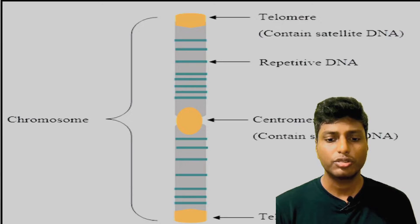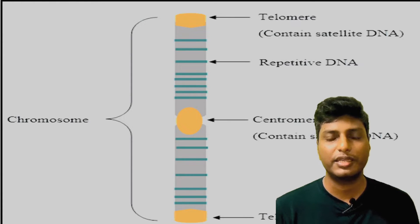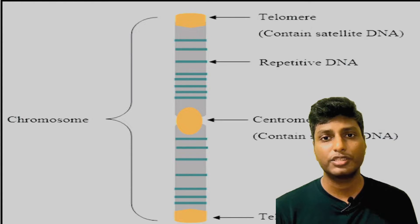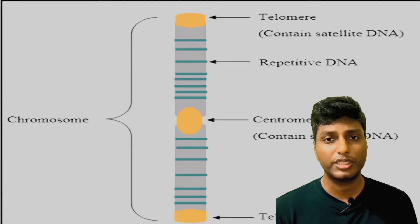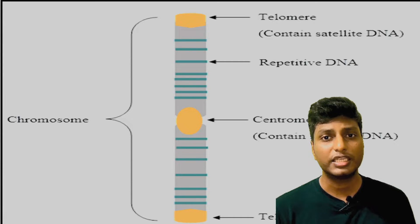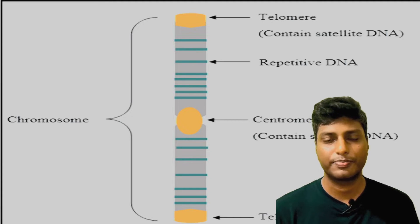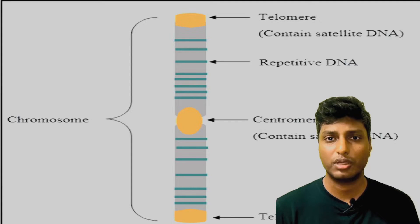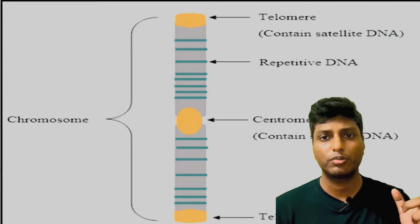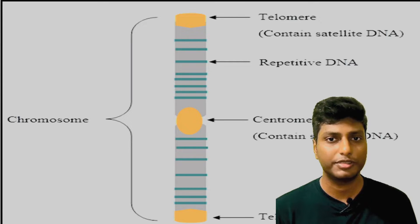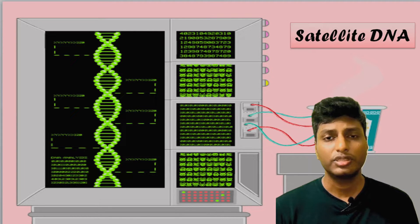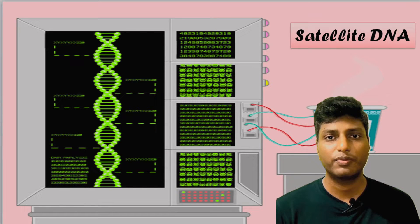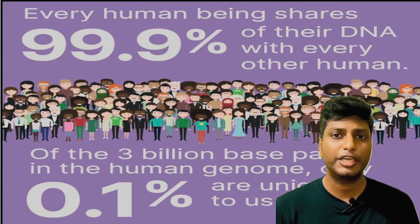Serotonin actually regulates our sleep and wake cycle. Likewise, every gene codes for a different protein. But do all genes code for proteins? The answer is no. There are many genes which do not code for proteins — such genes are called repetitive sequences, also known as satellite DNAs. Satellite DNAs are present in the center of the chromosome, called the centromere, and also at the ends of the chromosome, called the telomeres. They consist of highly repetitive sequences.